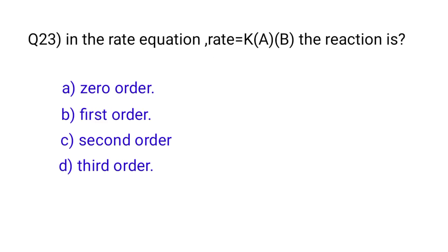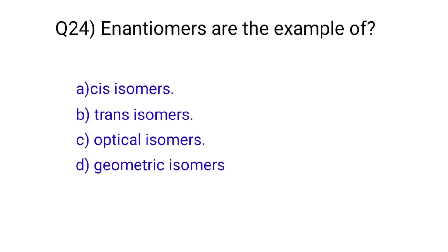Question number twenty-three: in the rate equation rate = K[A][B], the rate order is? The correct answer is C, second order. Question number twenty-four: enantiomers are the example of? The correct option is C, optical isomers.